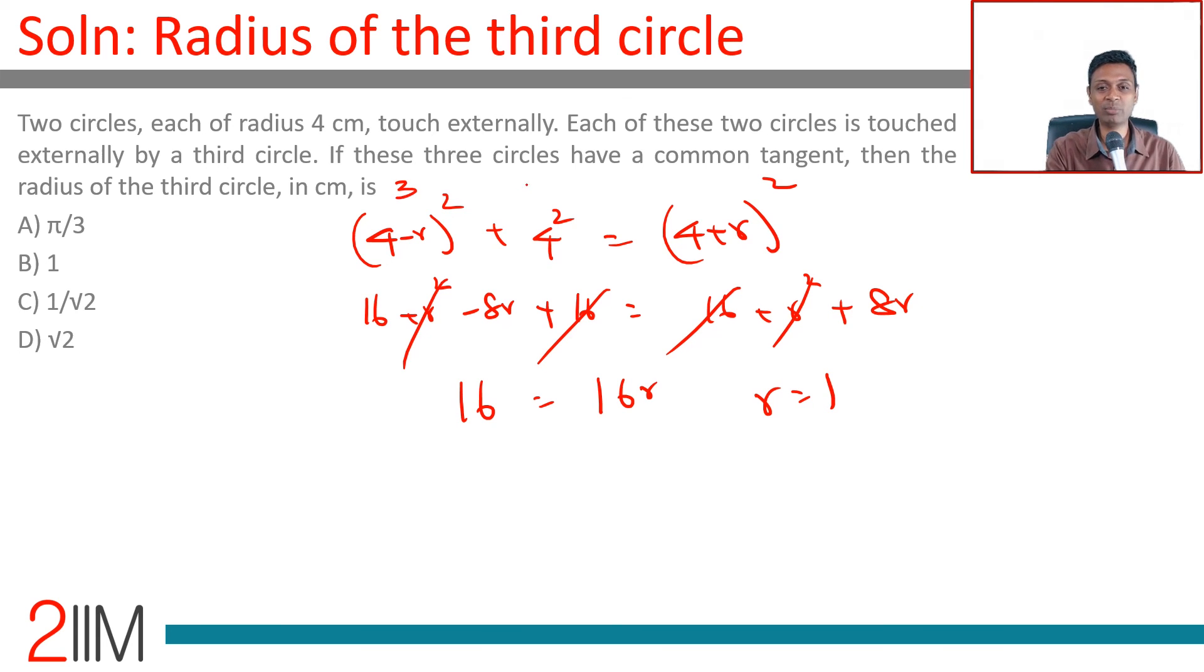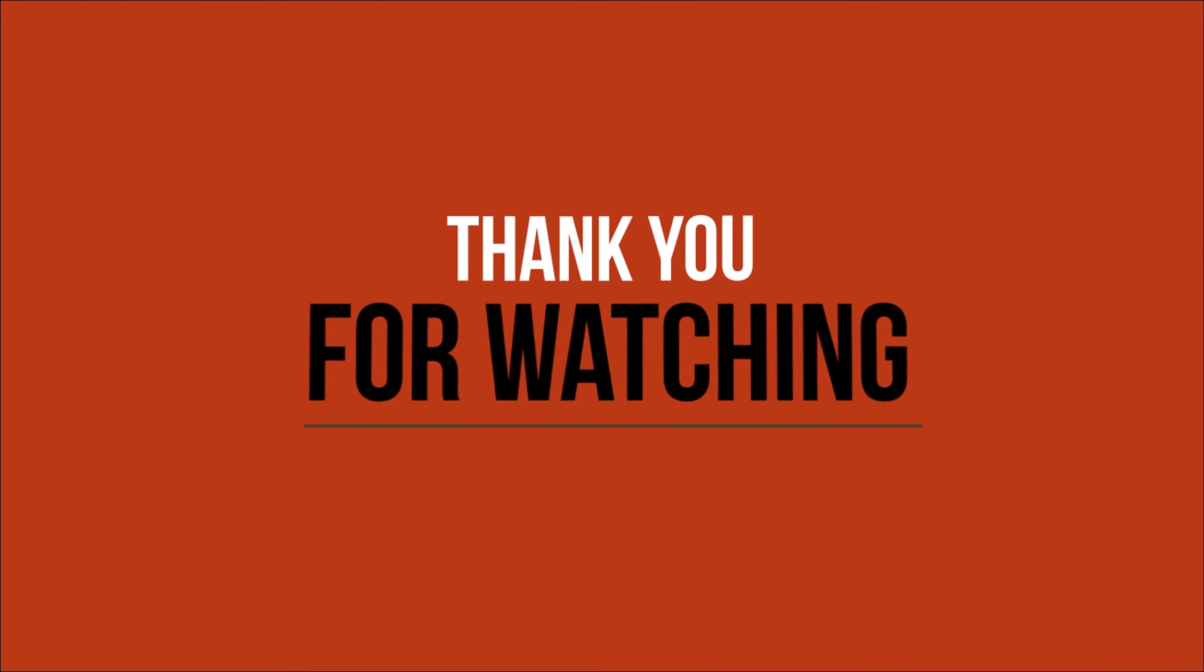We have a famous 3-4-5 triangle: 3 square plus 4 square is 5 square. Radius is 1.